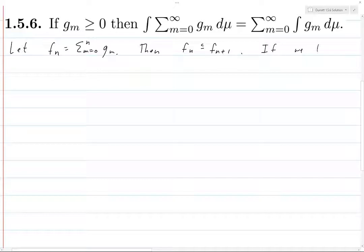Now, if we let F be the sum from m equals zero to infinity of g_m, which is also the limit as n goes to infinity of F_n—that's exactly what we're saying—then F_n converges to F.